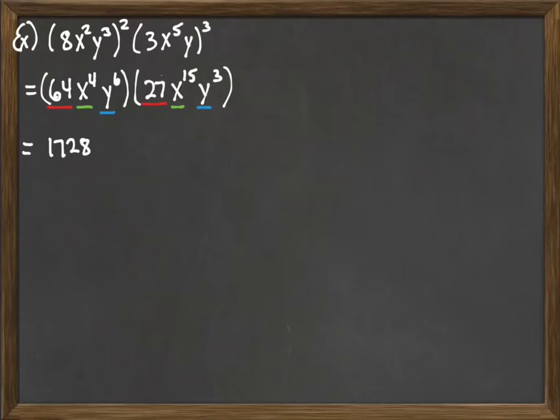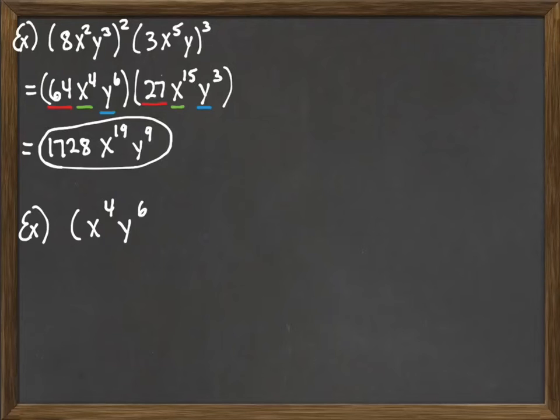And then we go to our variables, x and x. X to the fourth, x to the fifteenth. 4 plus 15, because we're multiplying, so we drop to addition, will be x to the nineteenth. And then we do y to the sixth times y to the third. So 6 plus 3 would be y to the ninth. So we get the answer 1,728, x to the nineteenth, y to the ninth. And let's move to a second example here.